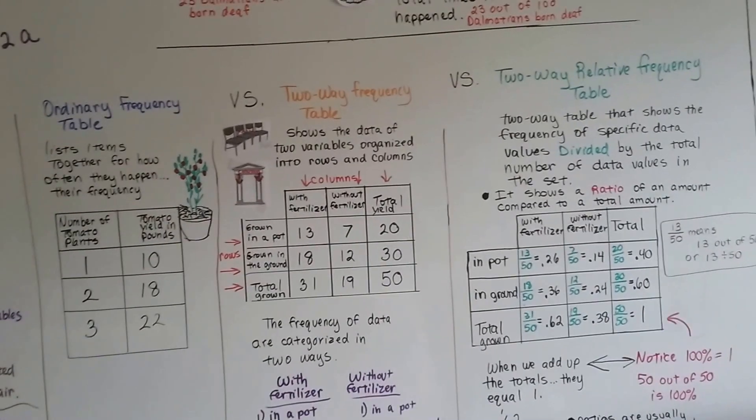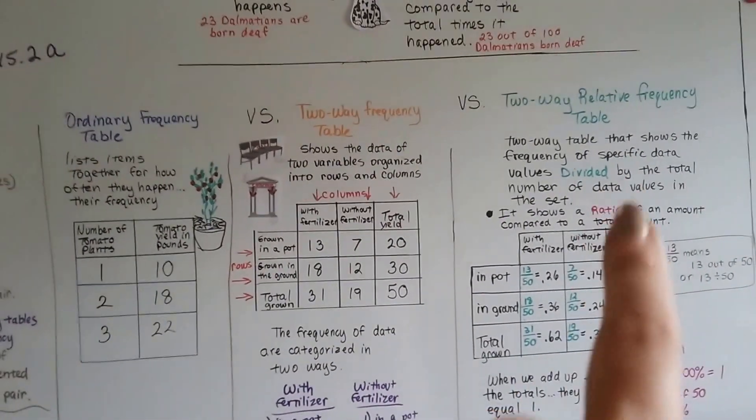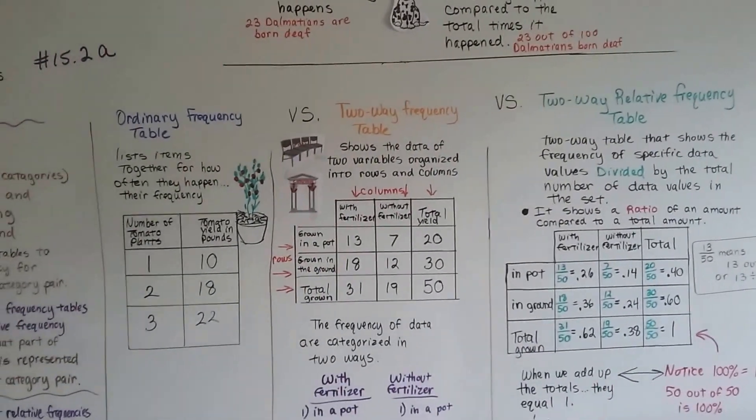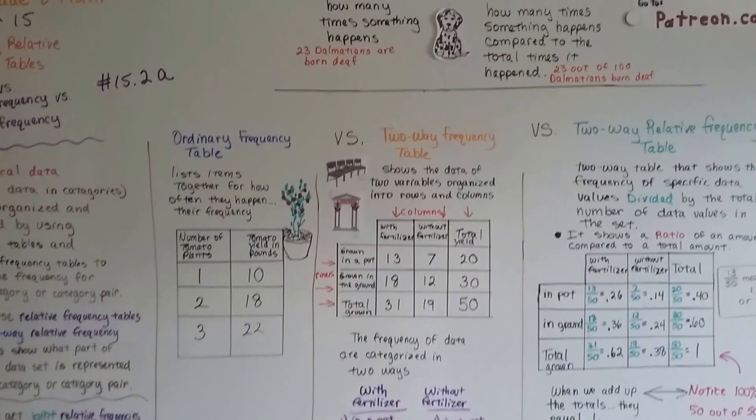We're going to talk about categorical data and these two-way relative frequency tables in this unit, and I hope I'll see you at 15.2b. Bye.